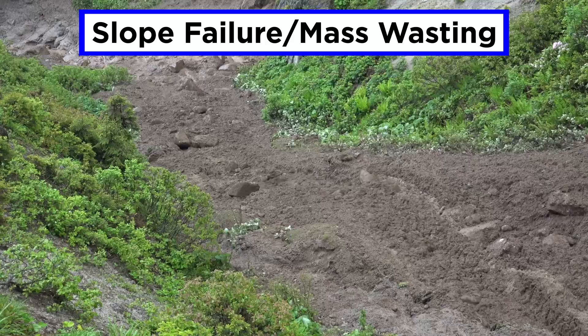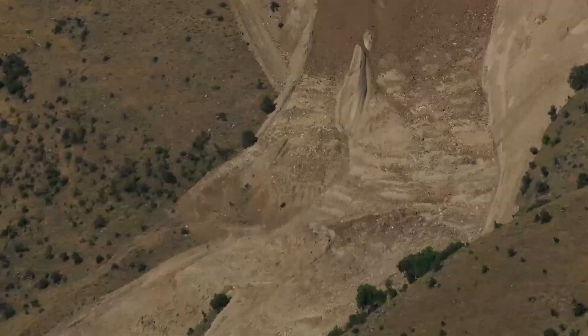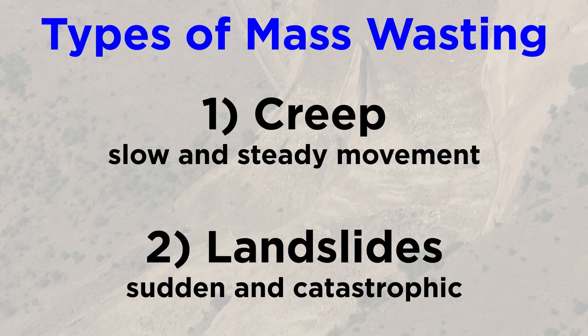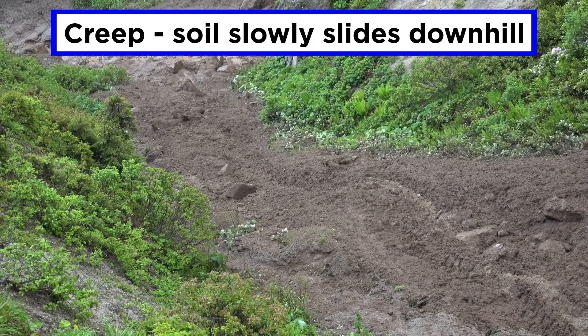Slope failures, also called mass wasting, refer to the movement of sediment downhill under the force of gravity. Mass wasting primarily occurs in areas with high relief, such as jagged mountain peaks or fault escarpments. Mass wasting can be broken down into two main types: creep, which is slow and steady movement, and landslides, which are sudden and catastrophic.